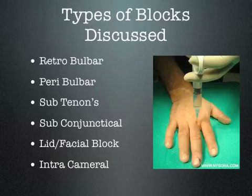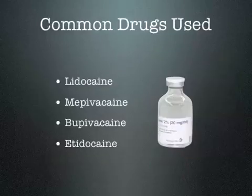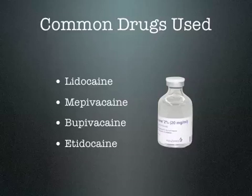The types of blocks we are going to discuss in this presentation are the retrobulbar block, the peribulbar block, the subtenon, the subconjunctival, the lid and facial block, and the intracameral block. The common drugs used for anesthesia are lignocaine at 2%, bupivacaine at 0.5% concentration, and ropivacaine and articaine, which deserve mention although not used frequently.